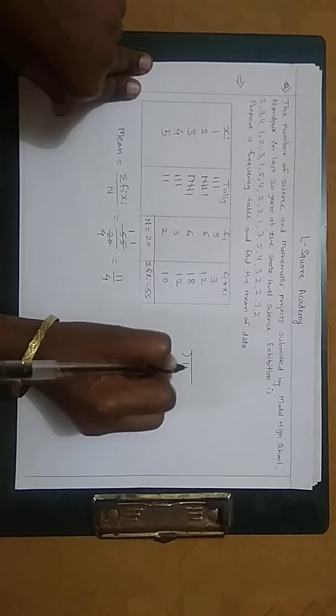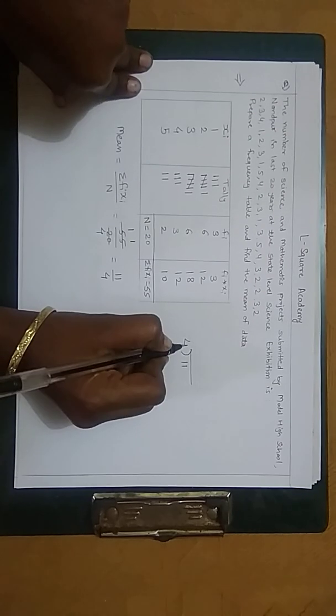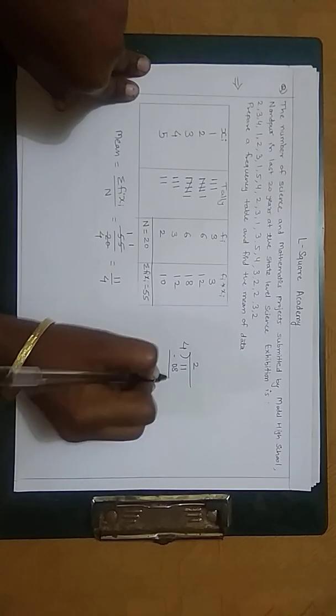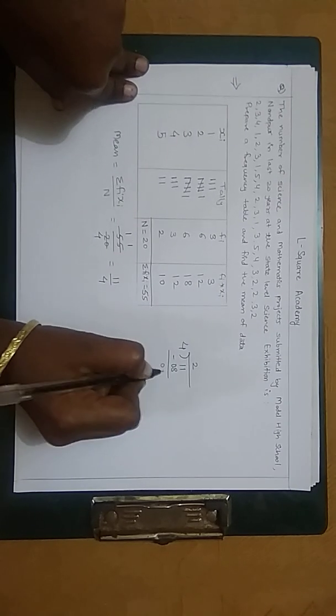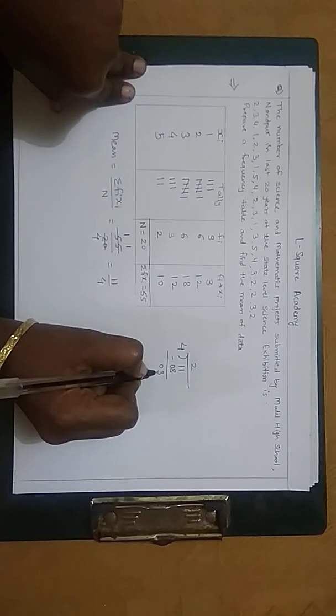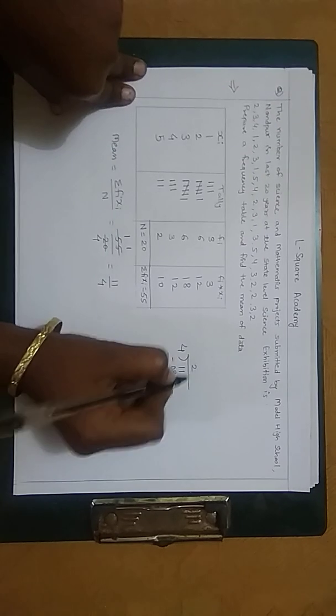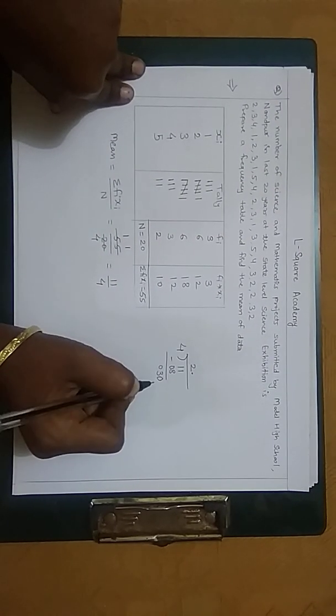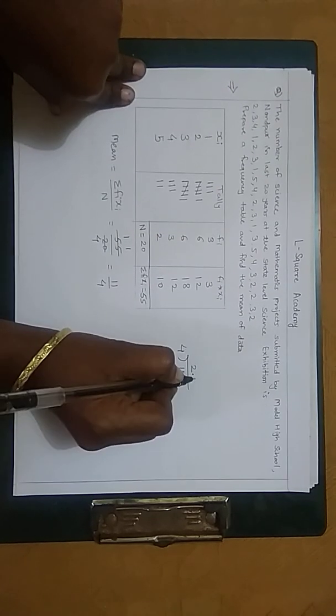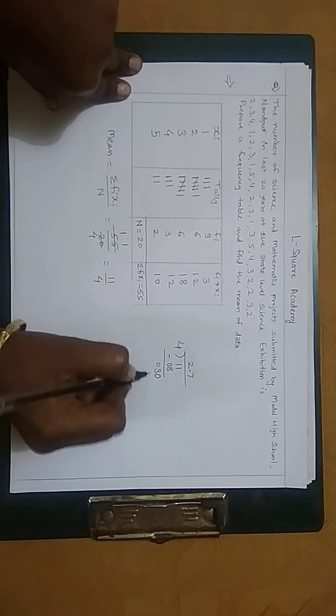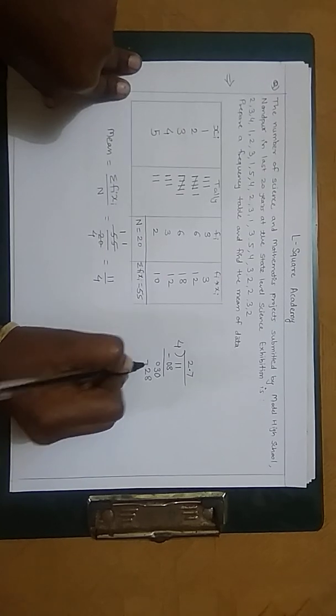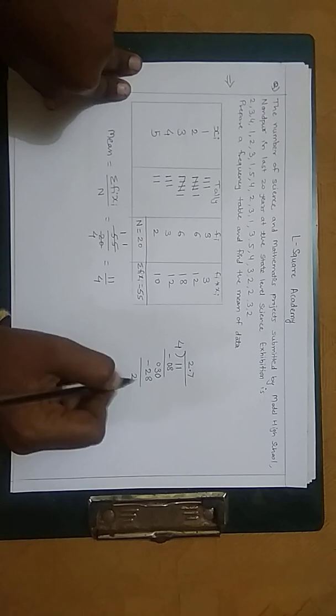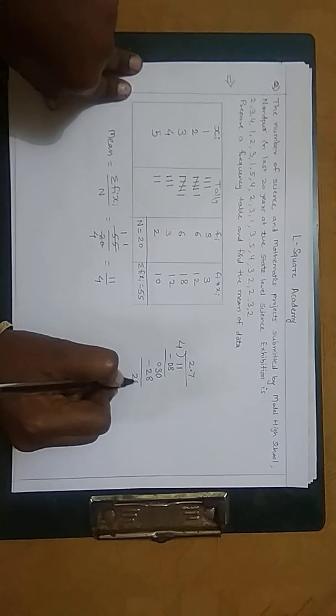Now we divide this 11 by 4. 4 times 2 is 8, so 11 minus 8, the answer is 3. Now the division will not be there, so that's why here we write a point, so here it should be 0. 4 times 7 is 28, the remainder will be 2.